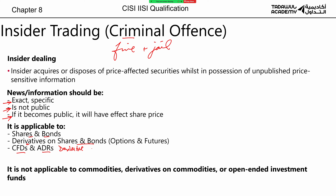Insider trading laws do not cover commodities, because there are no insiders in commodities — nobody has secret news about gold that would affect its price. So commodities don't have insiders. Derivatives on commodities also don't fall under insider trading laws, meaning you can trade commodities and derivatives on commodities without worrying about insider trading.